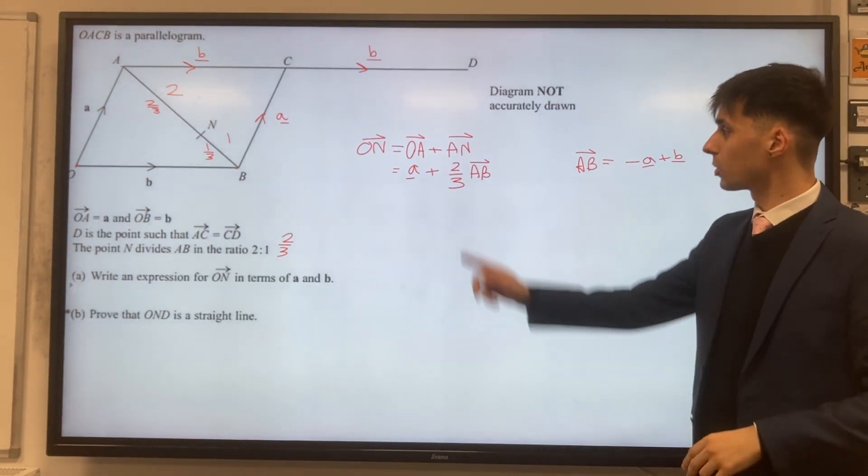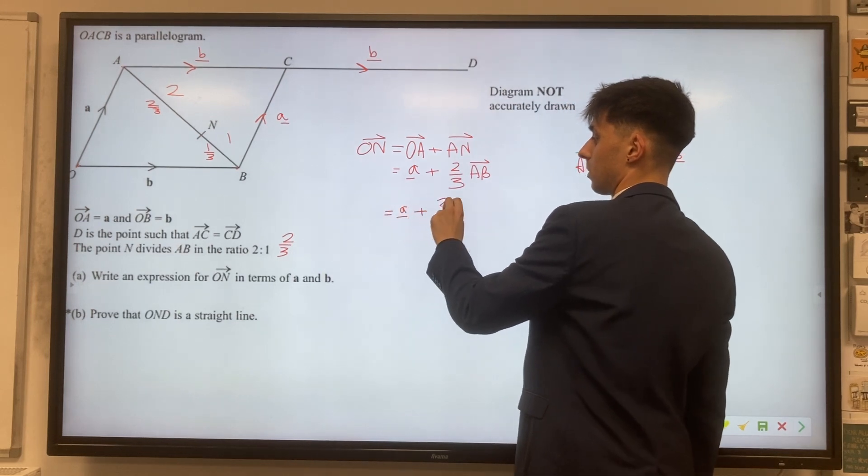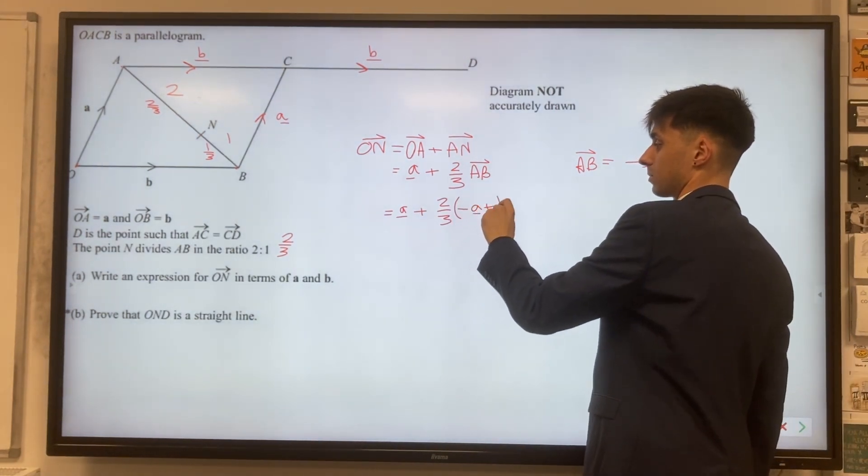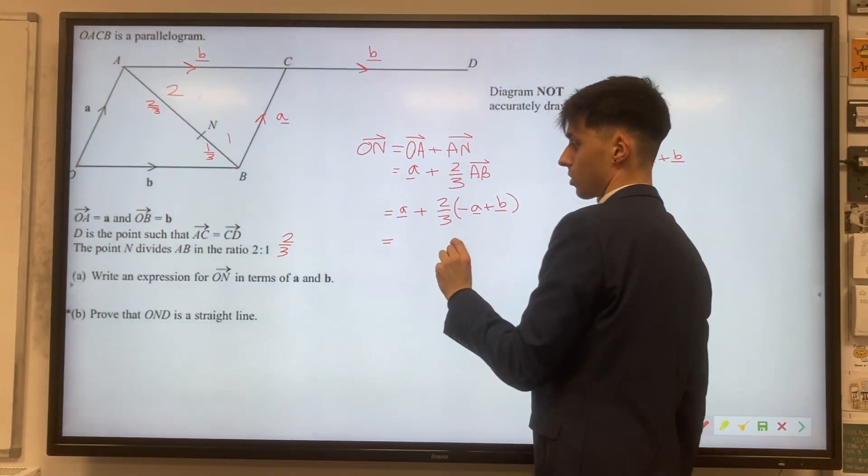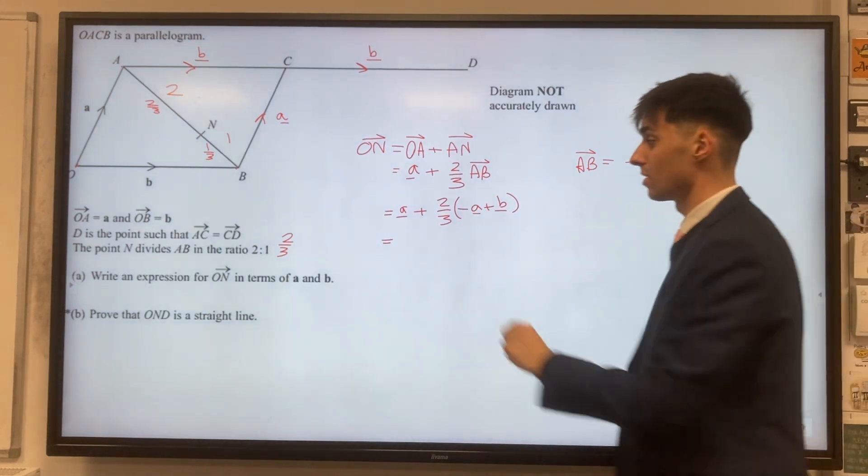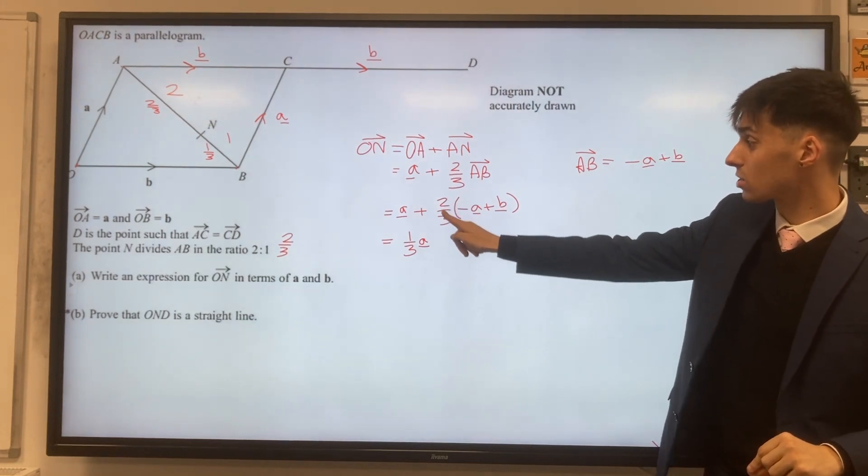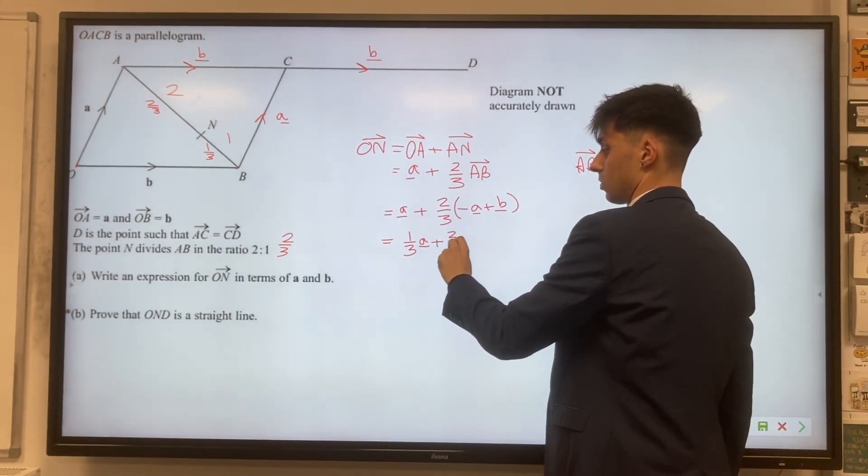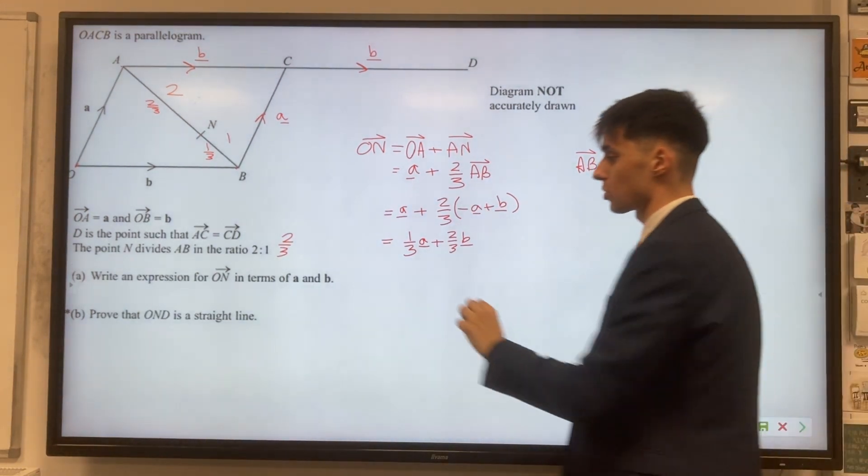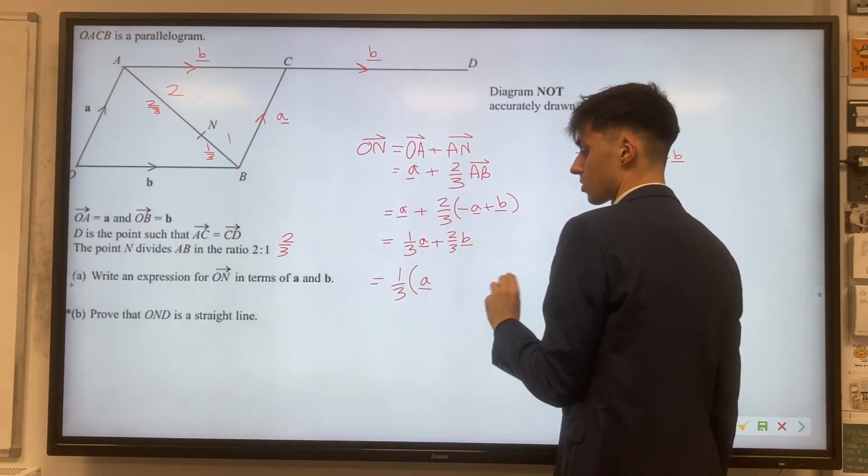Well, let's put that then into our vector for O to N, because we have a plus two-thirds of our A to B, which we now know is minus a plus b. So our final result for the vector O to N, we've got a minus two-thirds of a, so we're going to be left with one-third a. And we've just got for the b's, two-thirds of b. Now actually, it's going to be really helpful for us later, but I'm going to go ahead and do it now, just taking out this factor of a third from our vector O to N. So one-third (a plus 2b) factorized, that's our O to N.